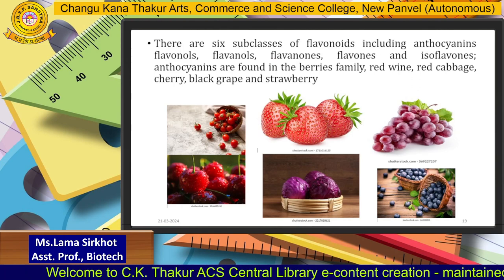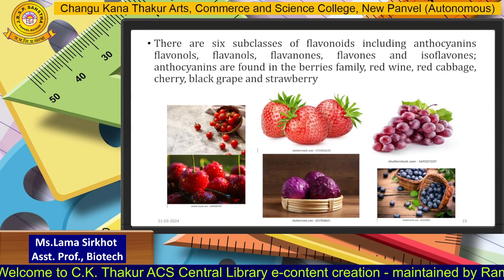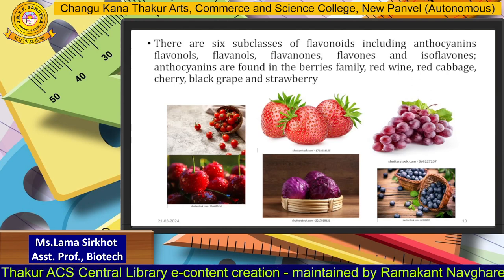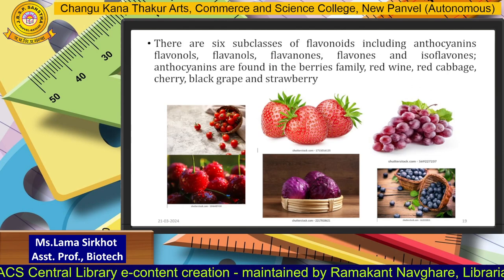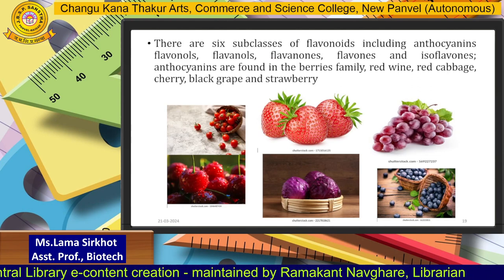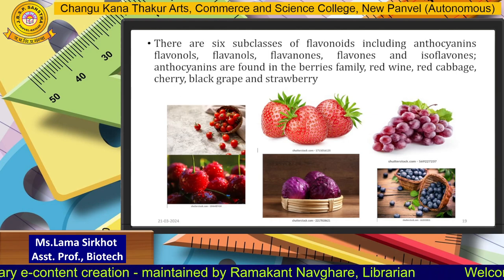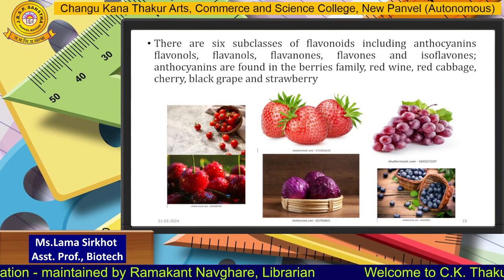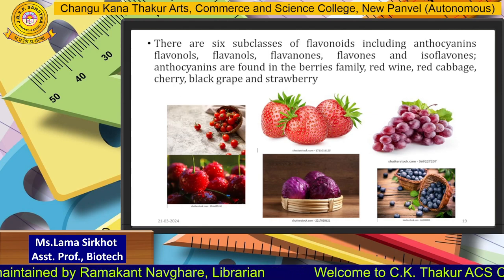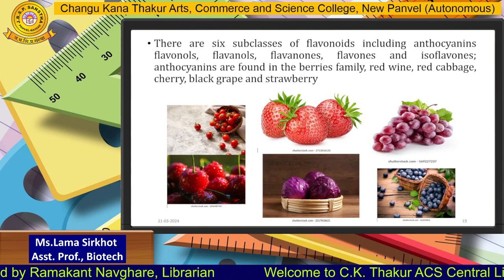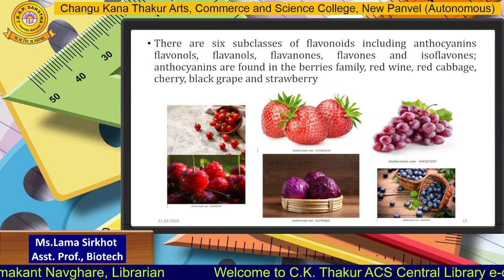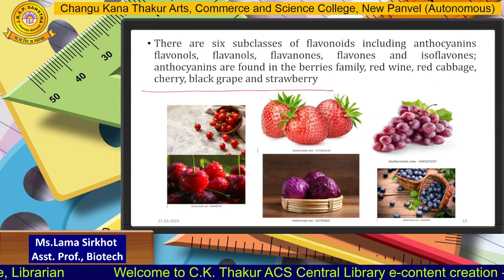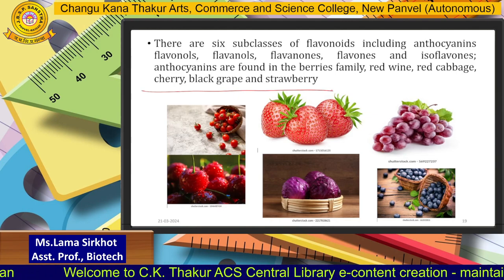There are six subclasses of flavonoids, which include anthocyanins, flavonols, flavanones, flavones, and isoflavones. Anthocyanins are found in the berry family, for example strawberries, grapes, red cabbage, cherries, and black grapes. These are examples of the berry family which contains polyphenols.